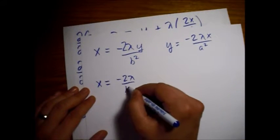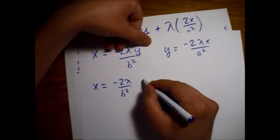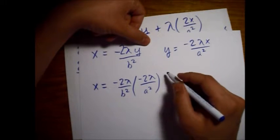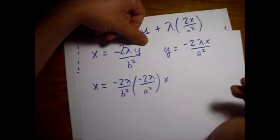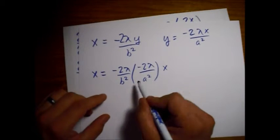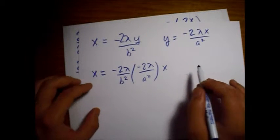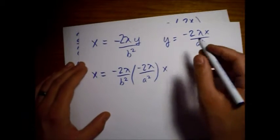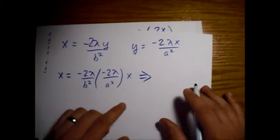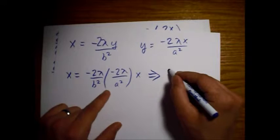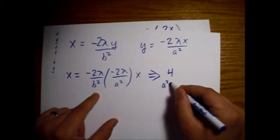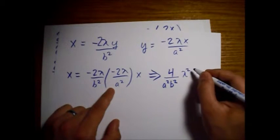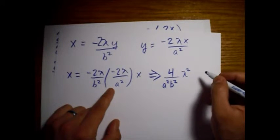Substituting: x = (−2/b²)·λ·(−2λx/a²) = (4λ²/a²b²)·x. Dividing out x, this gives us 4λ²/(a²b²) = 1.